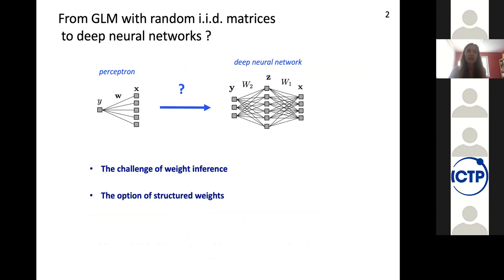Now, how do we go from the perceptron with one neuron to a deep neural network? And in this talk, I'll focus on the next simplest case, where I have just one hidden layer Z. And so I have the two matrices W1 and W2 to infer from a training data set. First, let me tell you why this is a challenging inference problem. And second, I will tell you about the directions that we have been exploring that exploit the possibility of looking at structured weights.